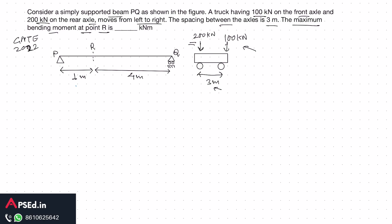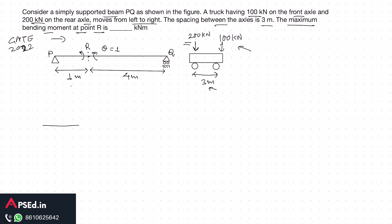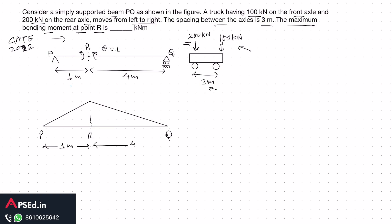We need to find the maximum bending moment at point R as this truck passes through the beam. First, we draw the influence line diagram (ILD) for moment at R by applying a unit rotation at point R. The resulting ILD for this simply supported beam shows the highest ordinate at R. The distance from P to R is 1 meter and from R to Q is 4 meters.